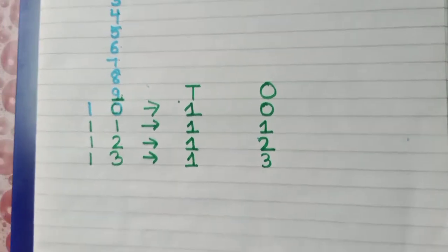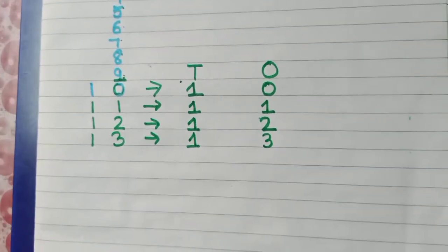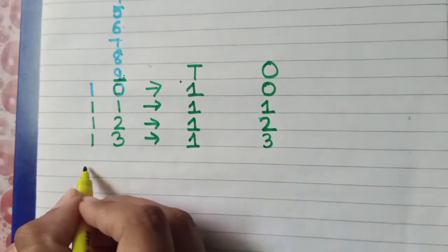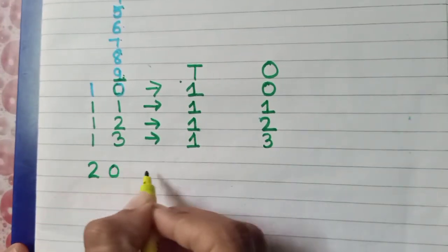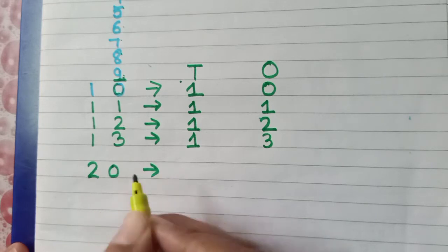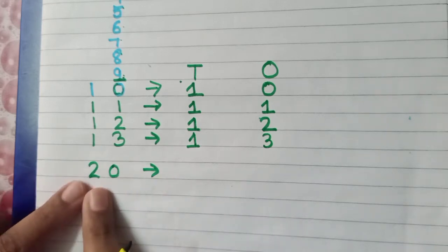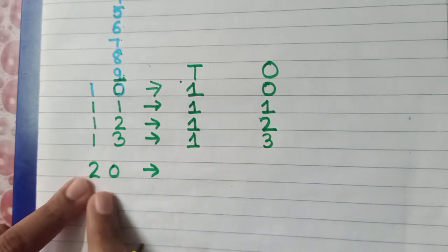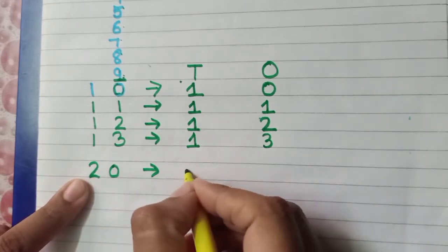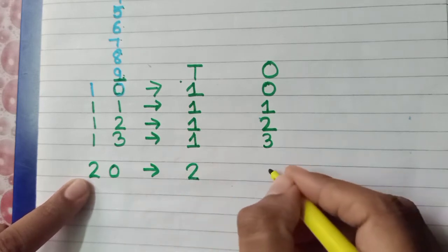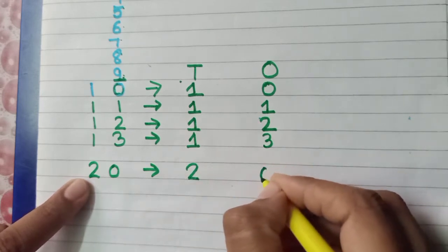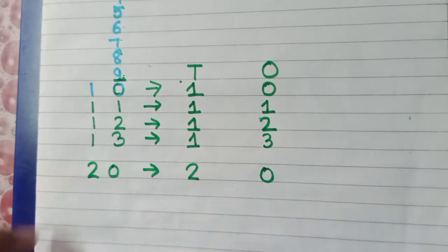Now look here. If we write twenty — agar hum yahaan pe twenty likhte hain — so twenty kitna ho gaya? Two tens. Two tens and zero ones.